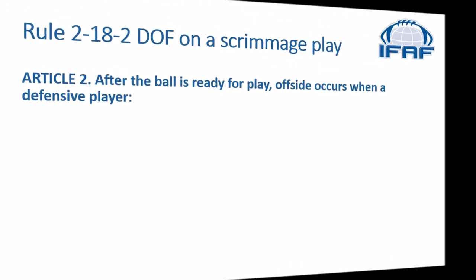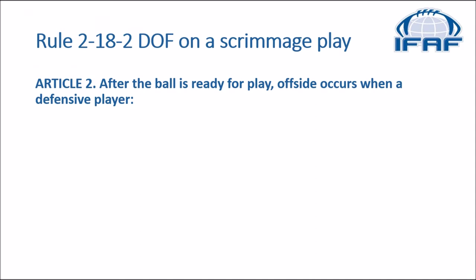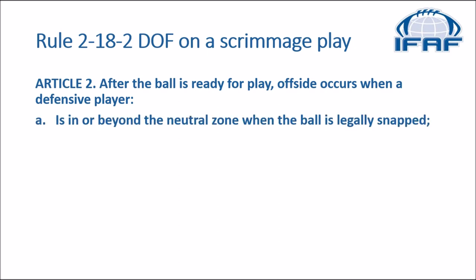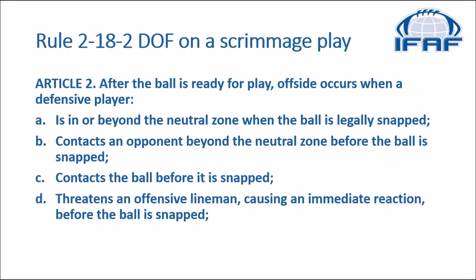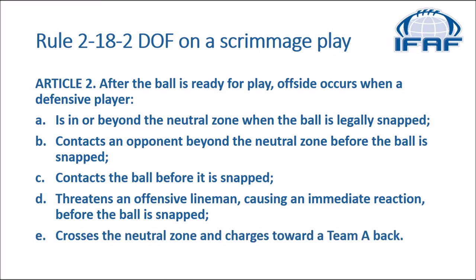Before we get to the clips, let's look at what the rulebook and the MOFO have to say. In the rulebook, Rule 218 on defensive offside on a scrimmage play, Article 2 says: after the ball is ready for play, offside occurs when a defensive player A) is in or beyond the neutral zone when the ball is legally snapped; B) contacts an opponent beyond the neutral zone before the ball is snapped; C) contacts the ball before it is snapped; D) threatens an offensive lineman causing an immediate reaction before the ball is snapped; or E) crosses the neutral zone and charges towards a team back.